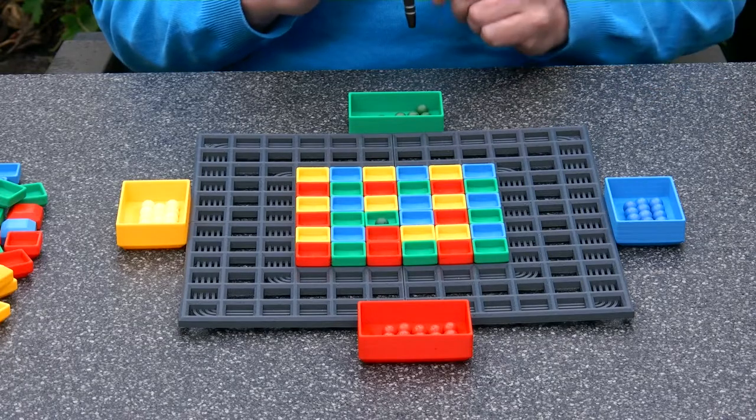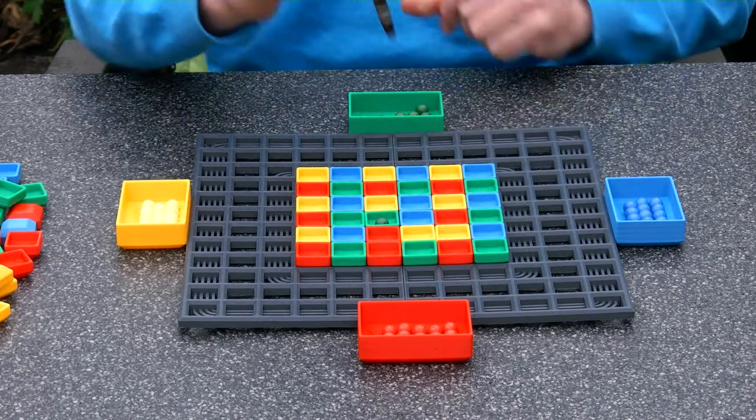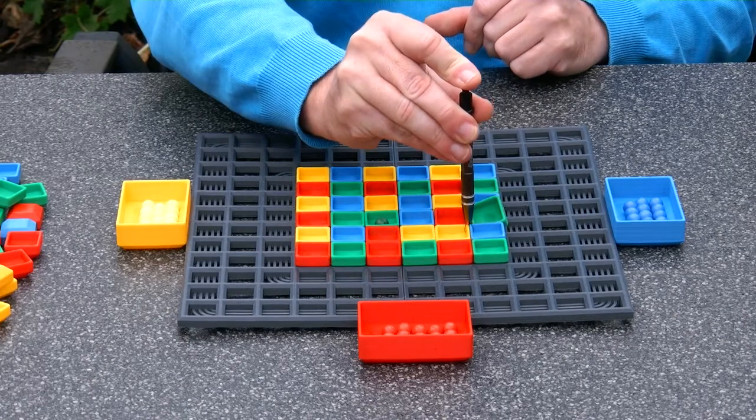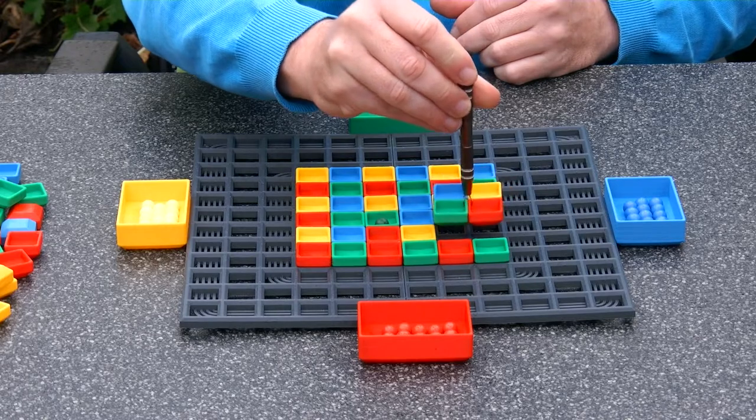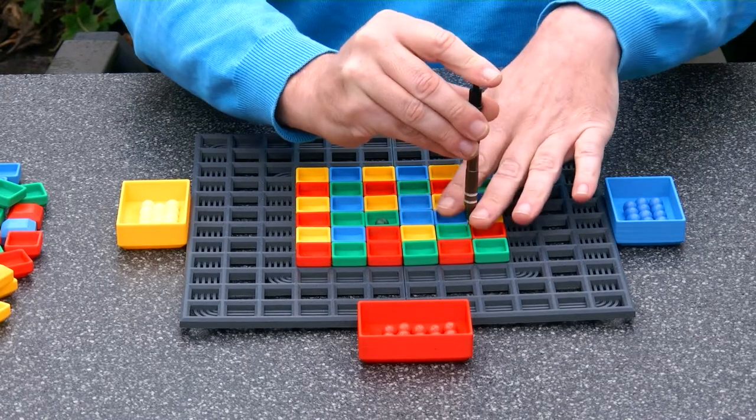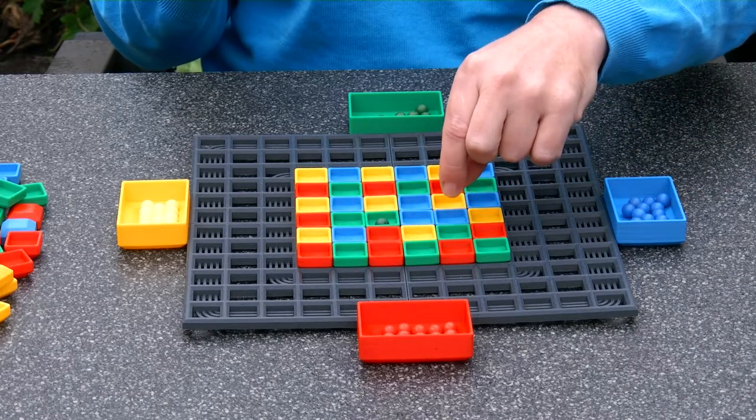So next is the blue player and maybe the blue player decides to make this move. So here we go. Pick, rotate. And the blue player also puts a ball here.